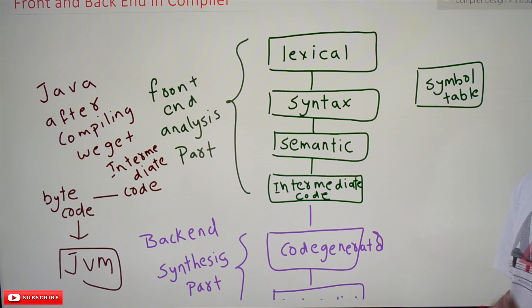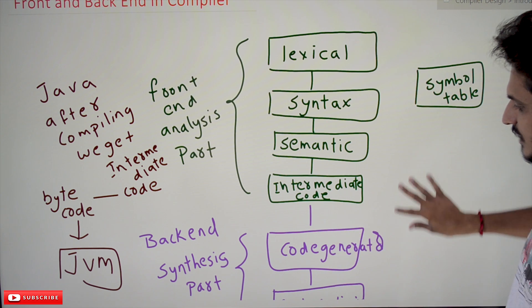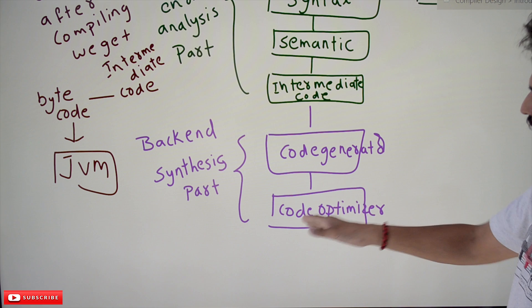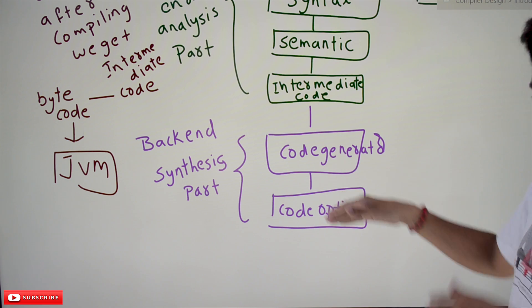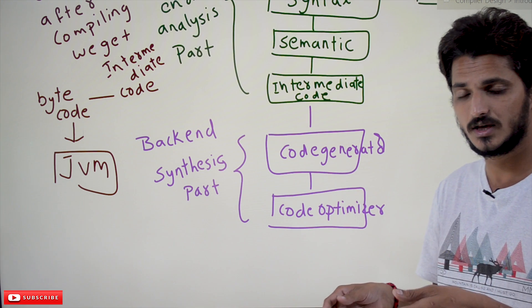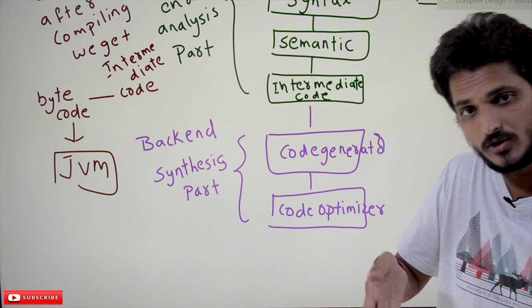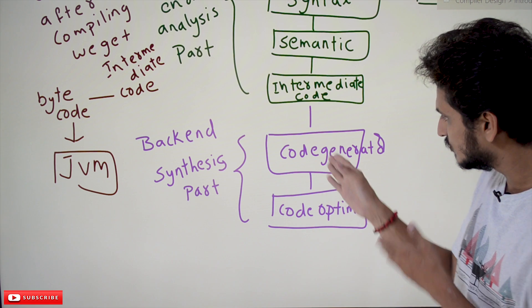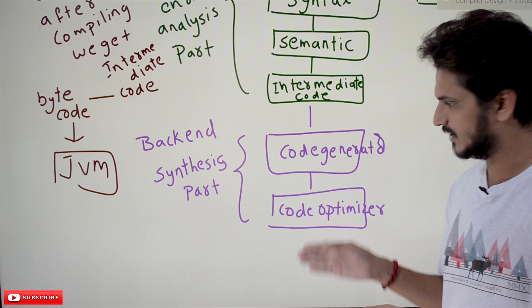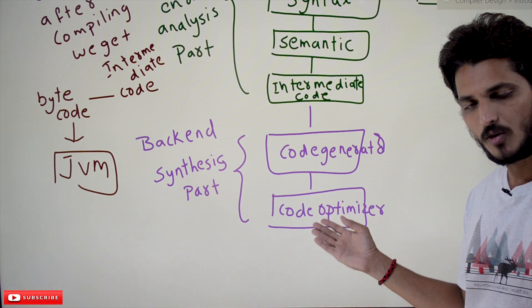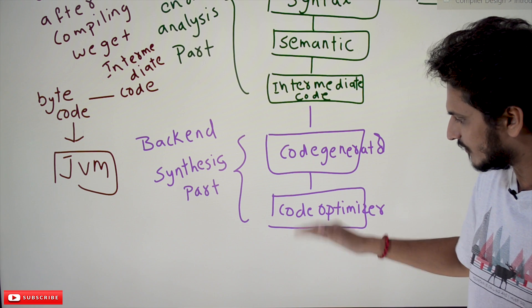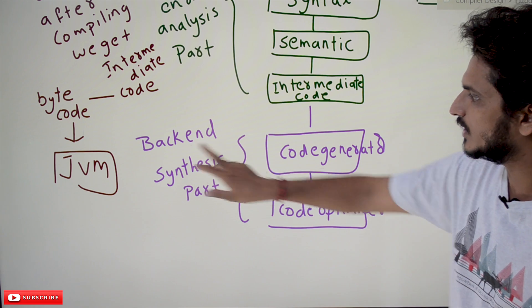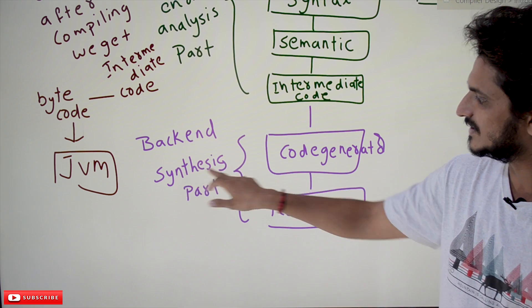The code generator uses this and generates code. It will generate machine-dependent code—whatever language our architecture or CPU understands—and it will be optimized by the optimizer. The final output will be given. This is what we call the back-end or synthesis part.